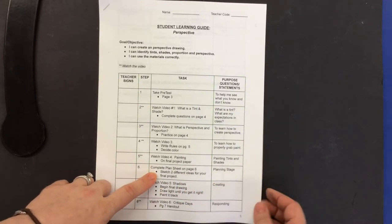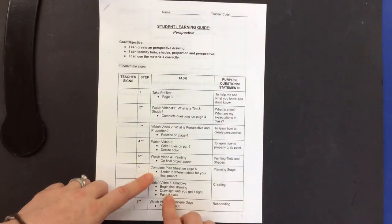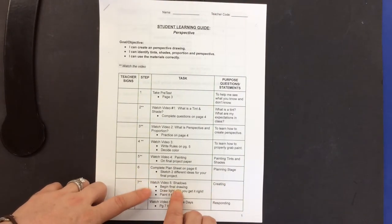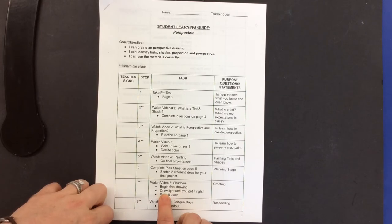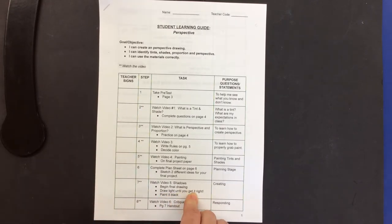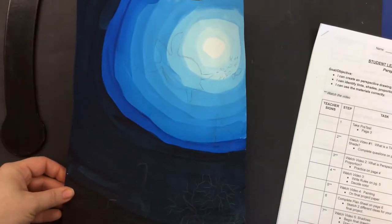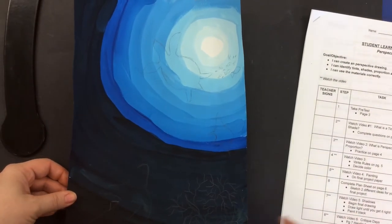So after you've done page 6, your two different ideas, the next step is to begin your final drawing. And I ask that you draw light until you get it right. So the first thing that you're going to do is using a pencil, you'll choose your favorite sketch that you did on page 6 in your plan sheet.